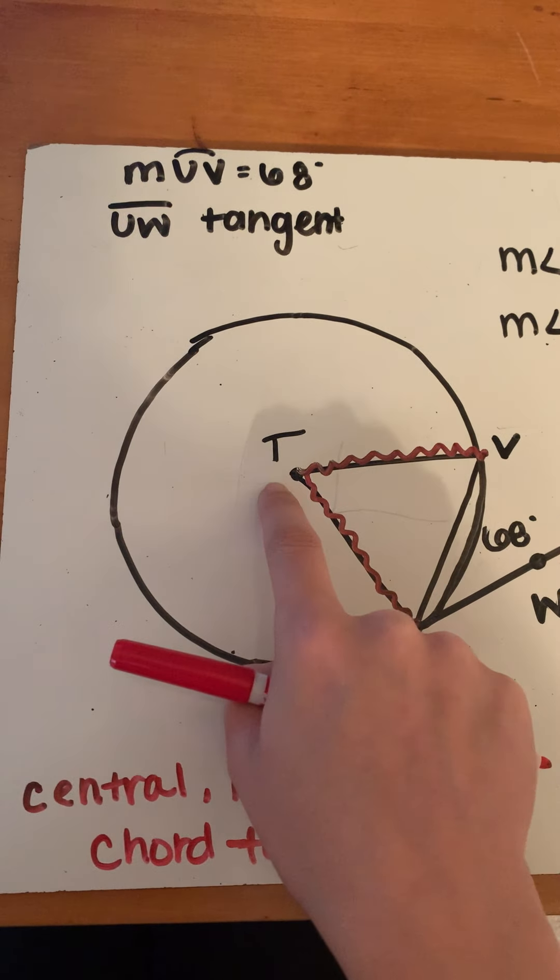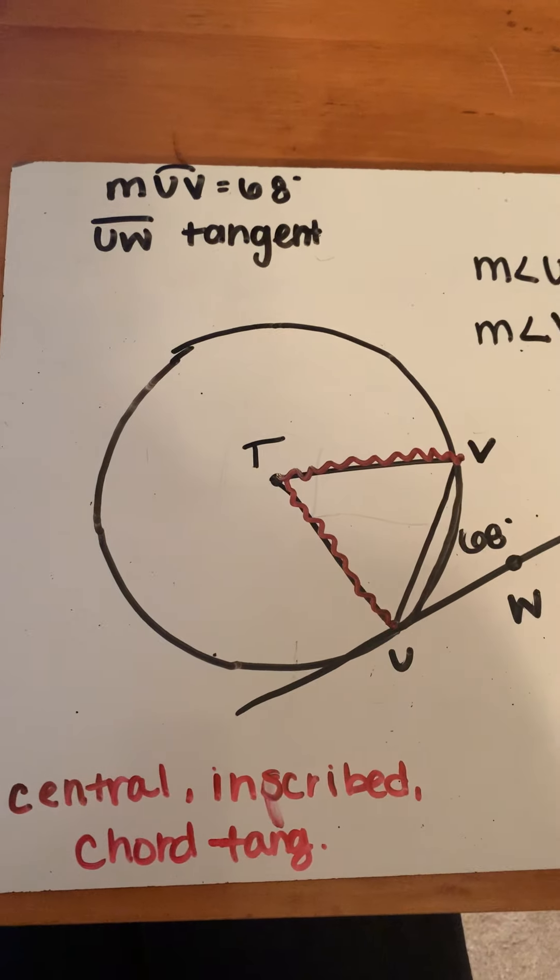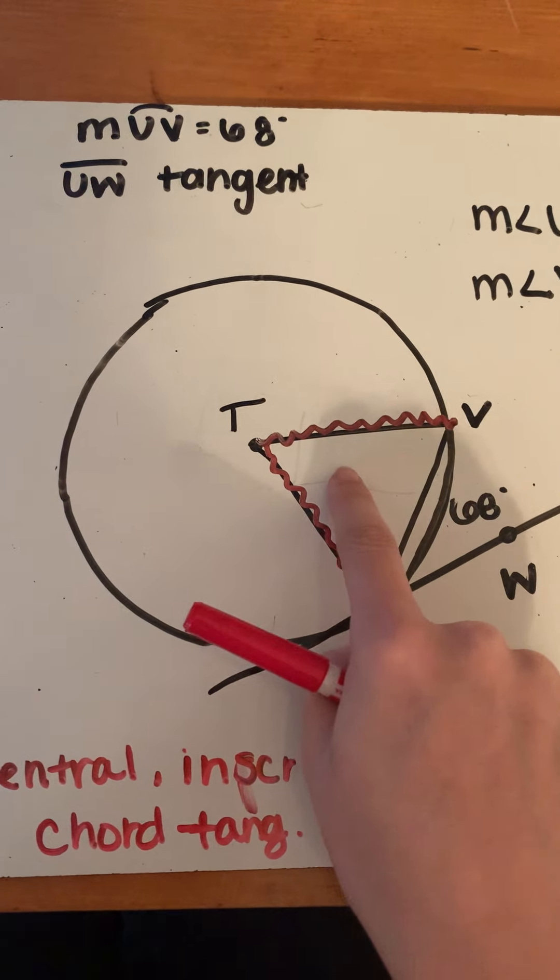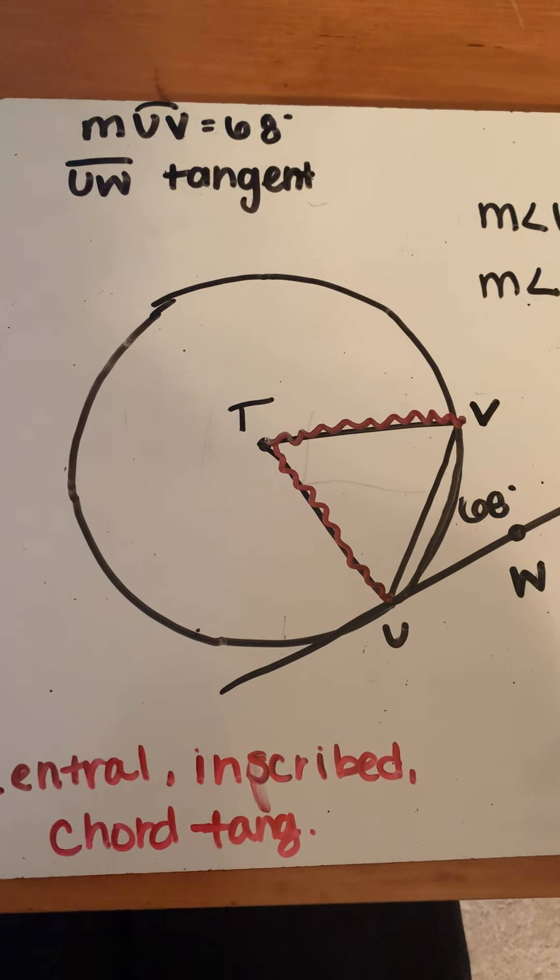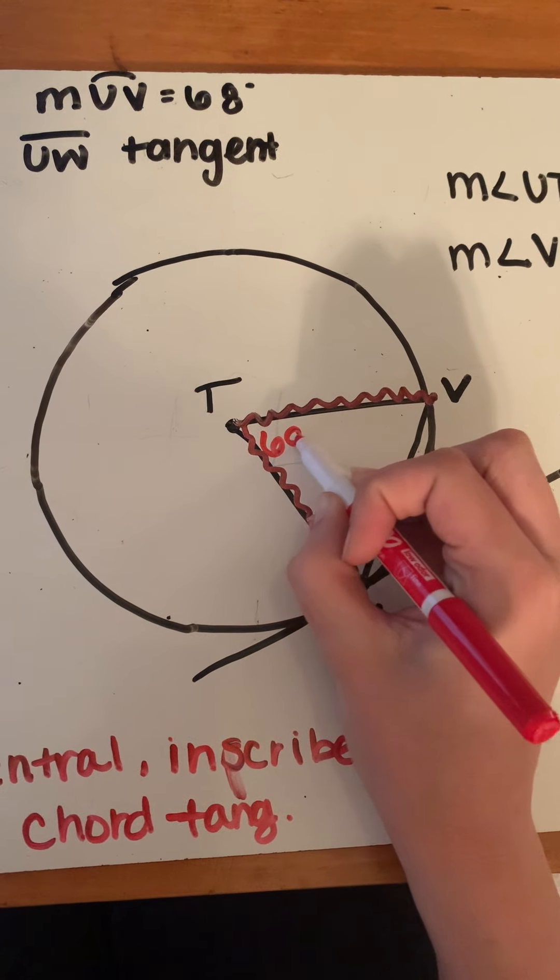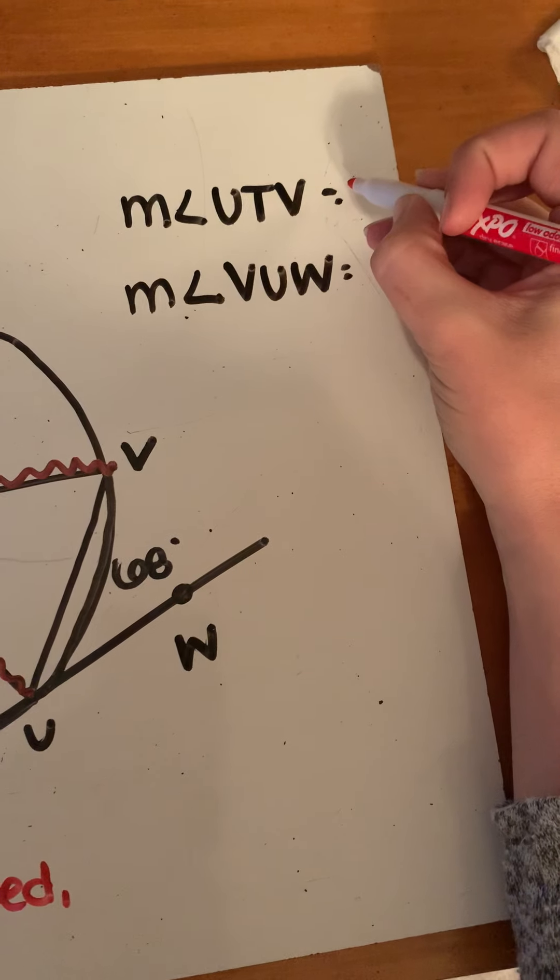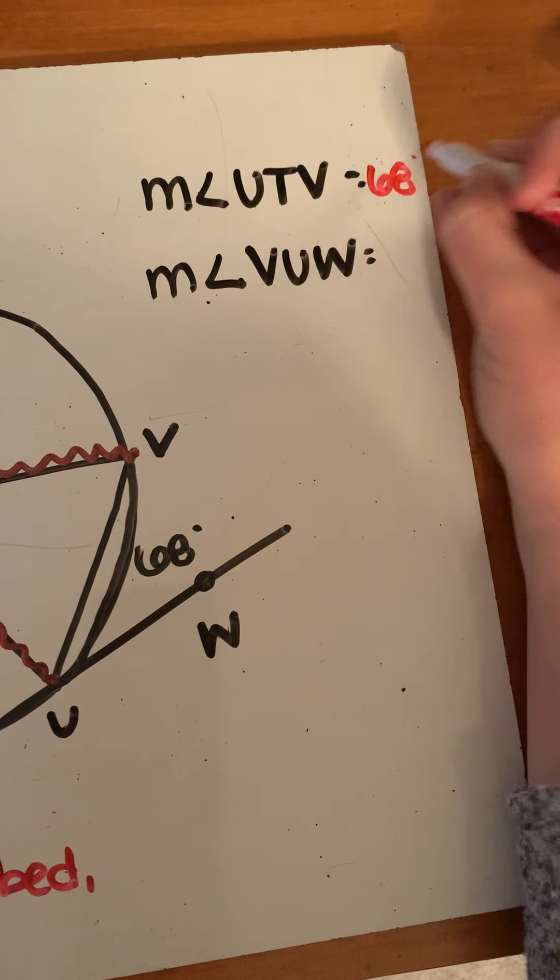Why? Because the center point is in the center of it. You have to remember: how does the central angle relate to the arc? They're the same. So that means this angle is 68 degrees, because central angles are the same as their arcs.